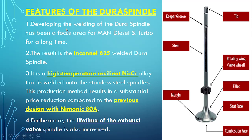So let's start today's video. What is the feature of the dura spindle? 'Dura' stands for durability — it is good in durability. So dura spindle basically refers to this exhaust valve spindle, called the dura spindle because it increases durability, meaning it increases the time between overhauls.